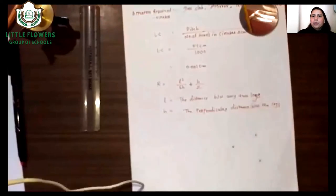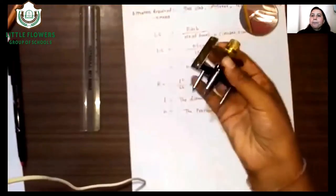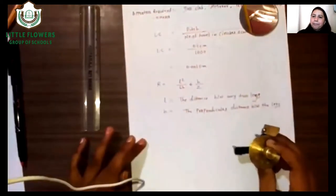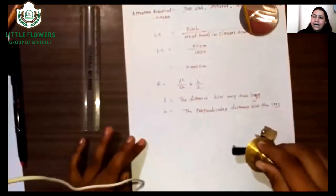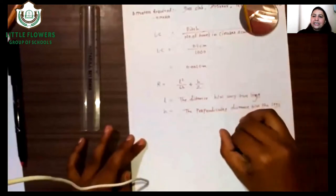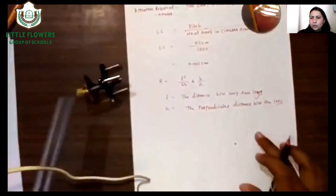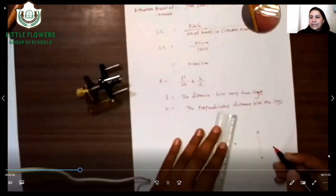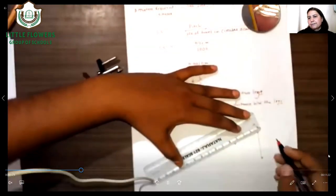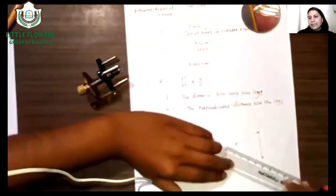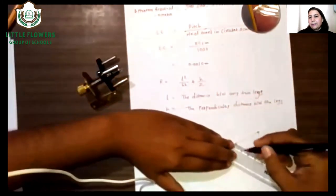First, we should calculate L. For calculating L, place the spherometer on paper and press it gently to make marks. After pressing, we get three dots on the paper. Let us circle these dots and join them with the help of a scale to form lines.